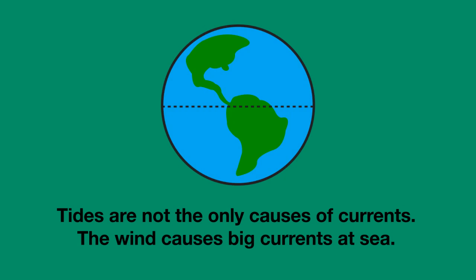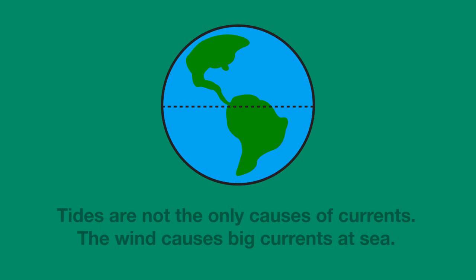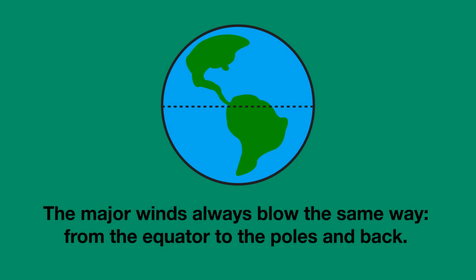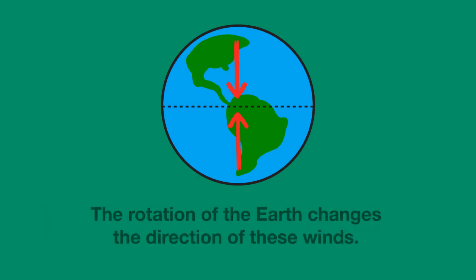Tides are not the only causes of currents. The wind also causes big currents at sea. The major winds on Earth always blow in the same direction, from the hot equator to the cold poles and back. But the rotation of Earth changes the direction of these winds, and I will explain how.